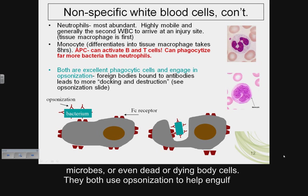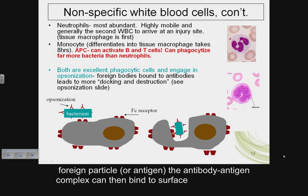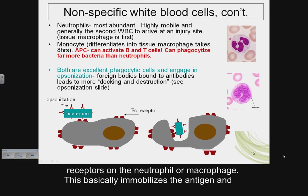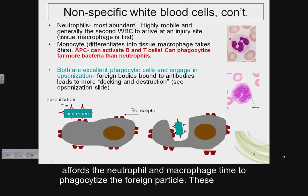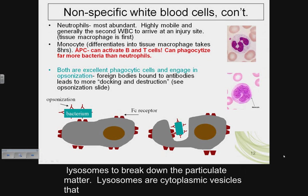The macrophage and neutrophil are considered non-specific immune cells — they do not discriminate between the type of material they ingest and can engulf any type of bacteria, other microbes, or dead or dying body cells. They both use opsonization to help engulf foreign material: when antibodies bind to a foreign particle or antigen, the antibody-antigen complex can then bind to surface receptors on the neutrophil or macrophage, immobilizing the antigen and affording time to phagocytize it.